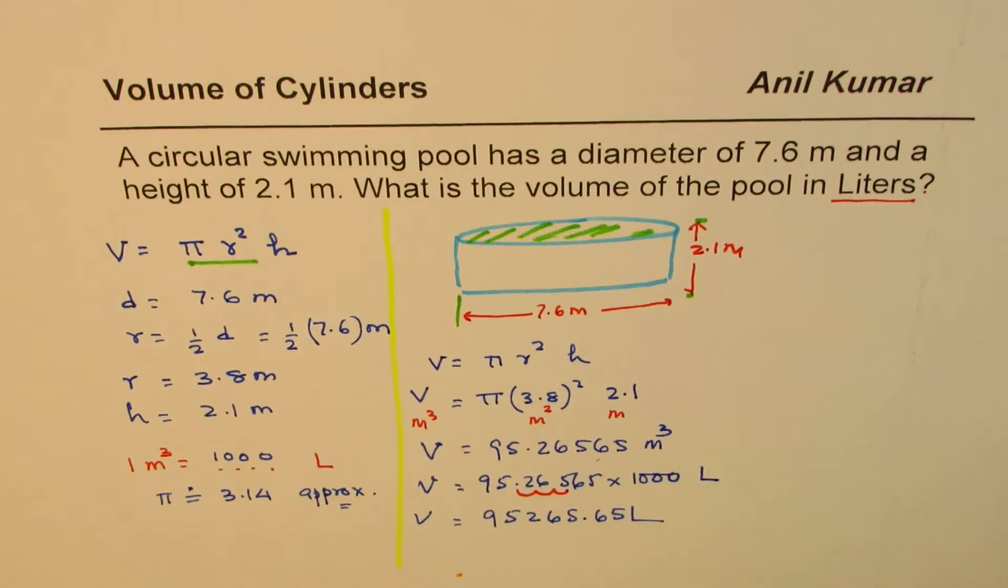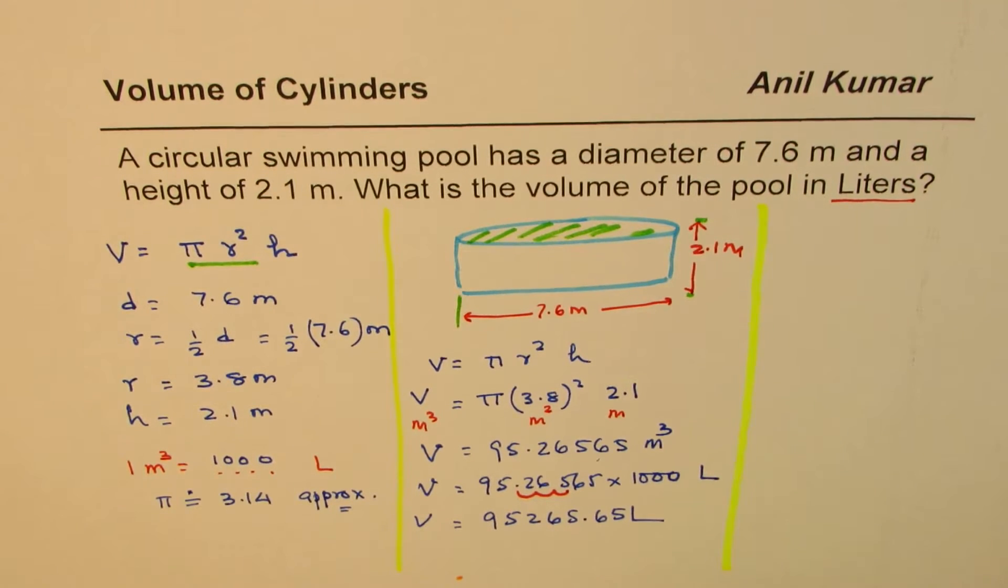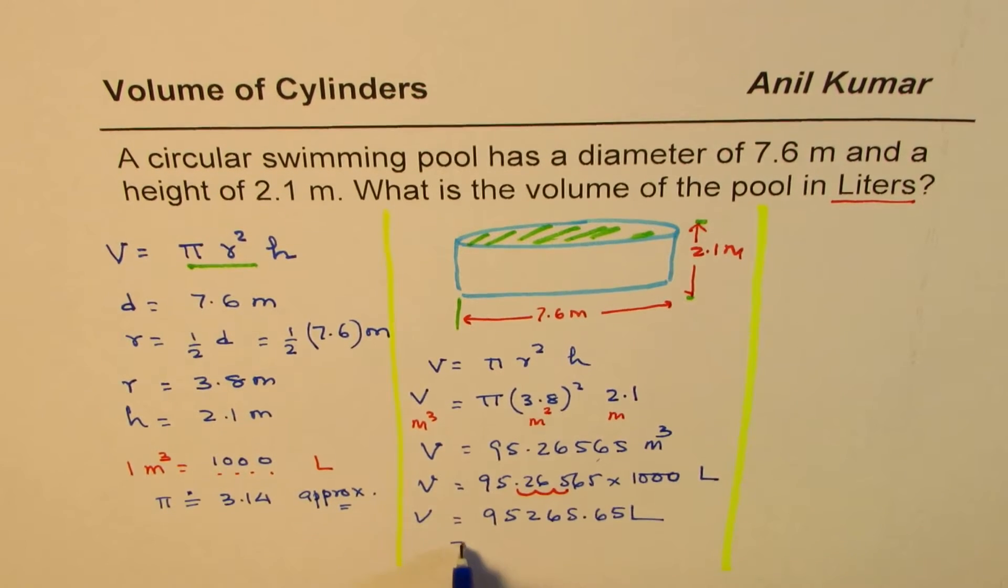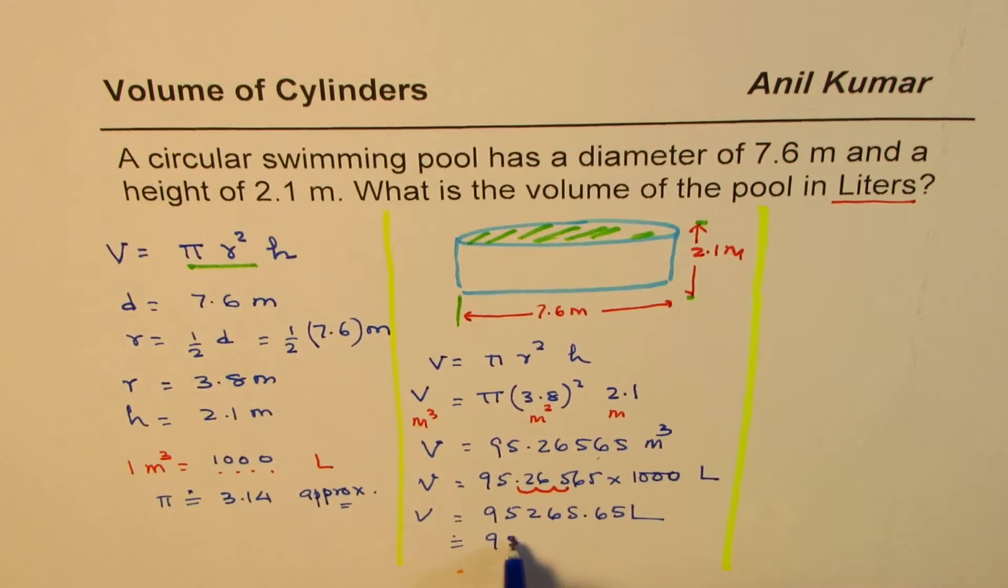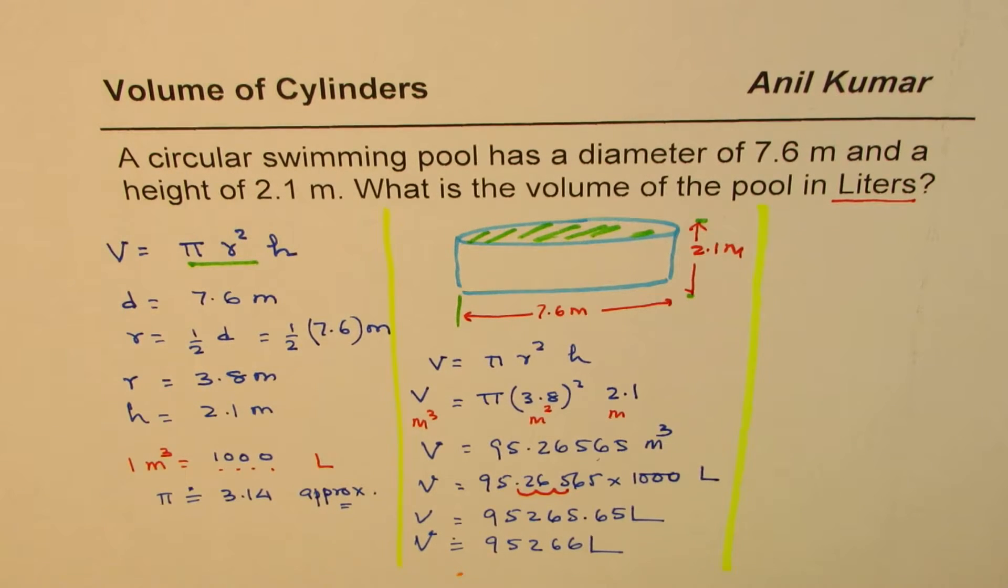You see, multiplying by 1,000 is simple since you can always move the decimal three places to get your answer. So that is how you should be solving this question, and you could always round this answer to 95,266 liters. So that becomes your capacity or volume of this particular swimming pool.